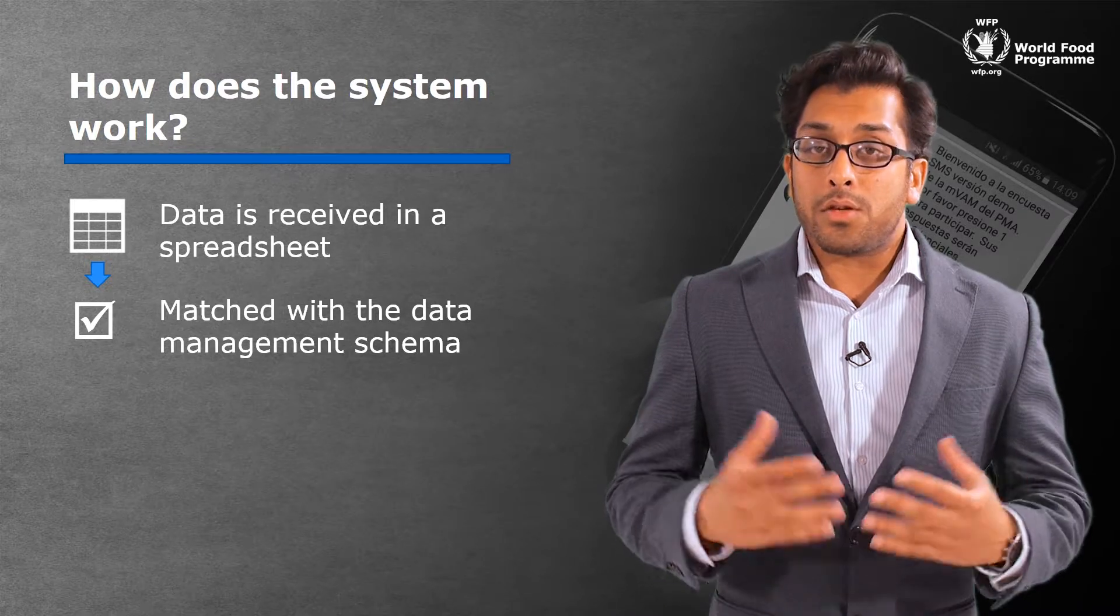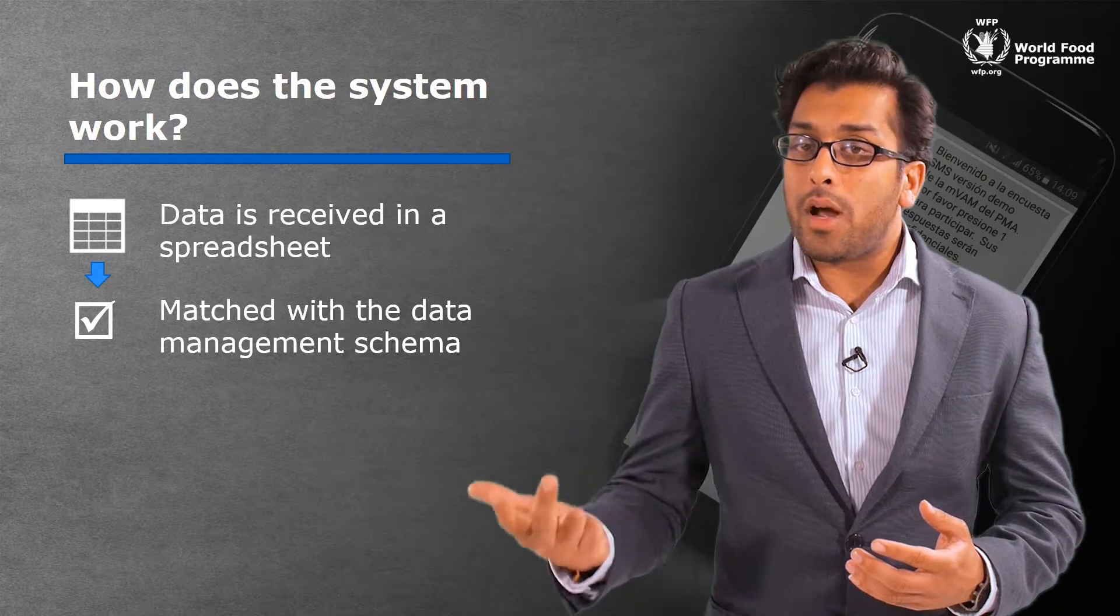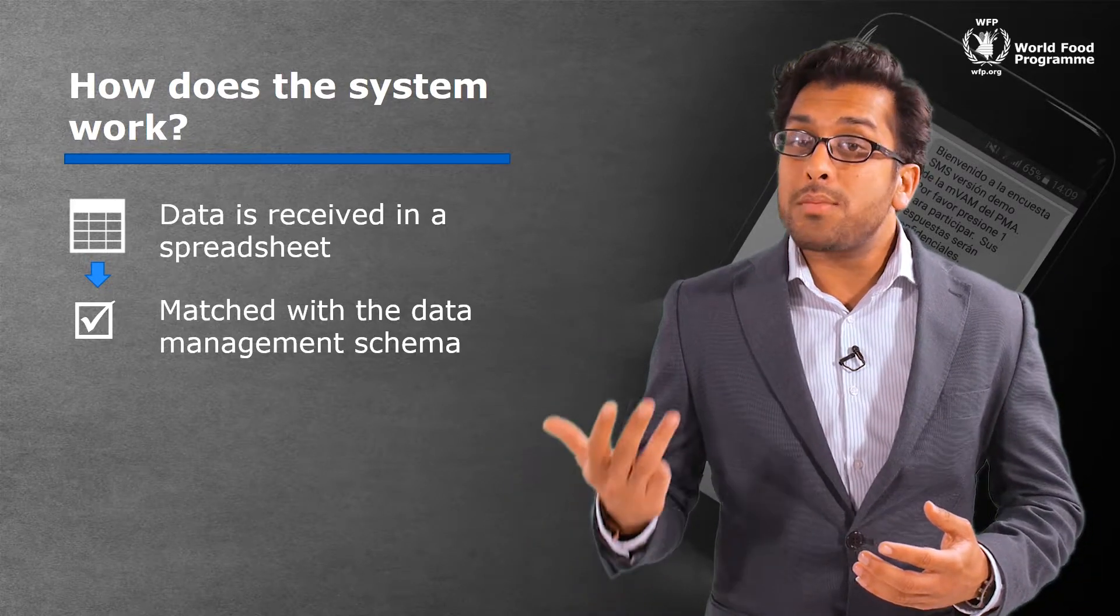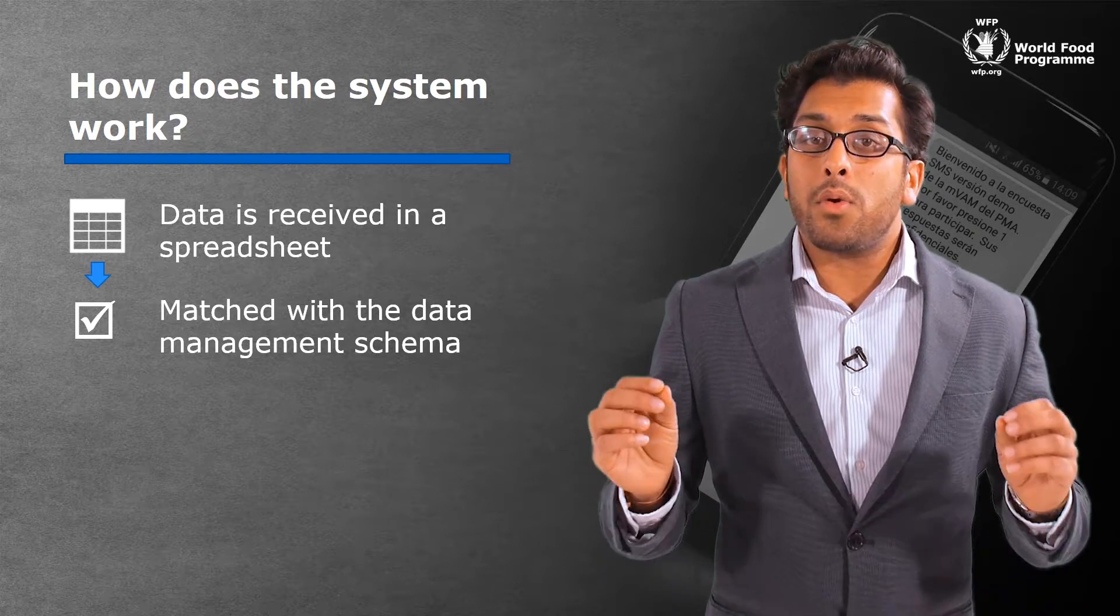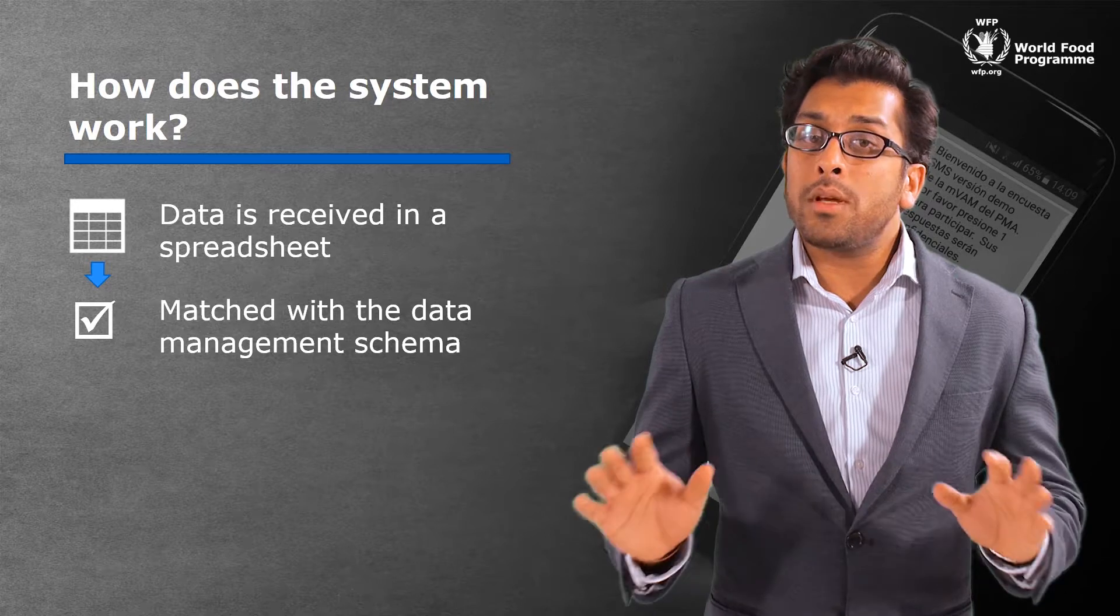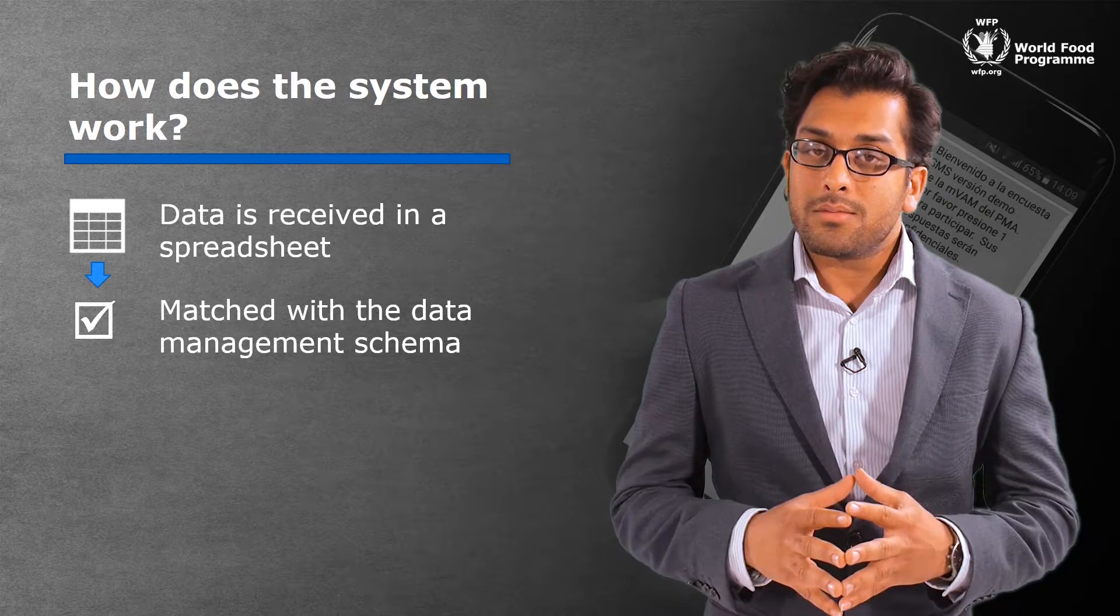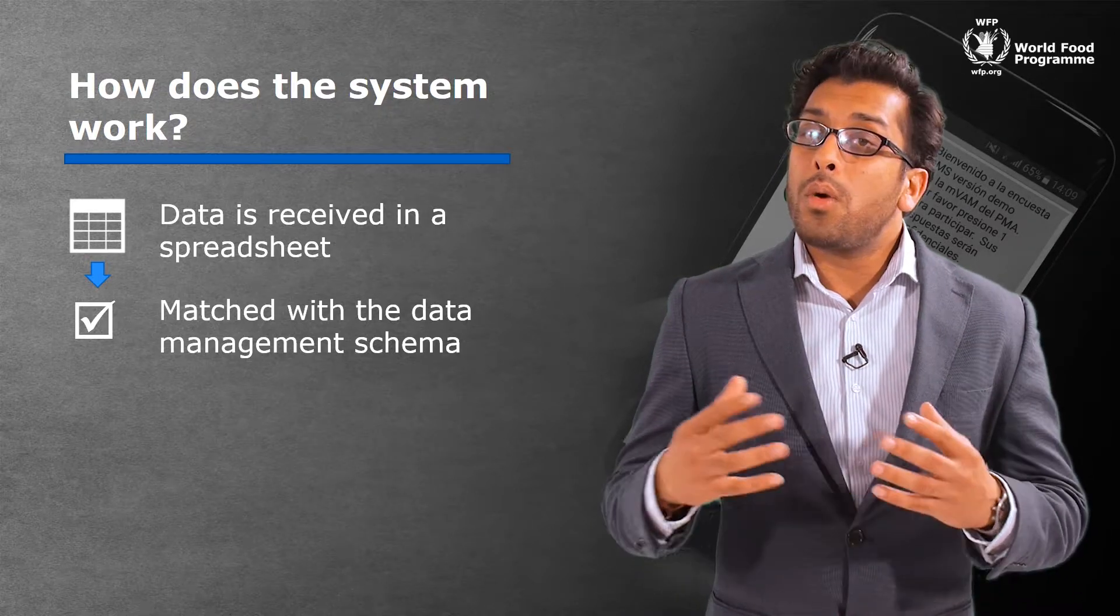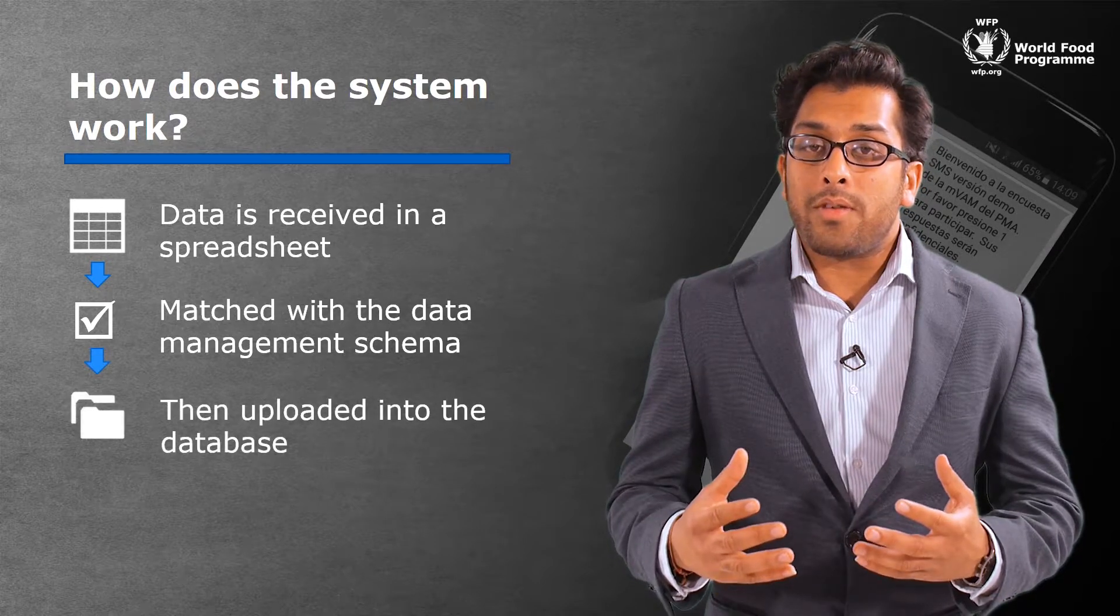This means that for certain fields like food security indicators, administrative districts, and certain demographic variables, you must make sure that the microdata and field names are encoded in compliance with VAM guidelines. Exceptions are only permissible for surveys with uncommon or highly unique questions in a questionnaire.